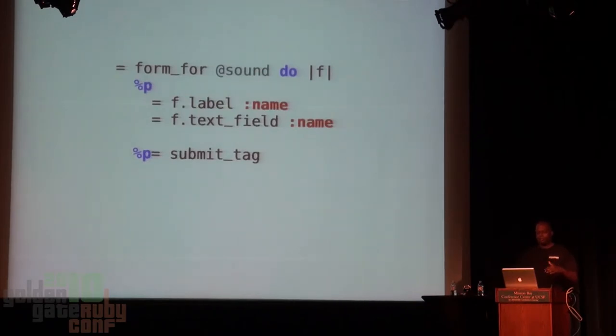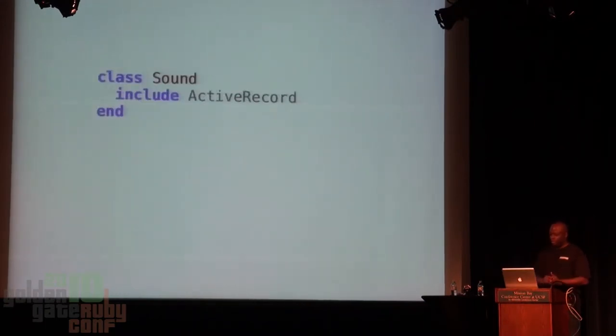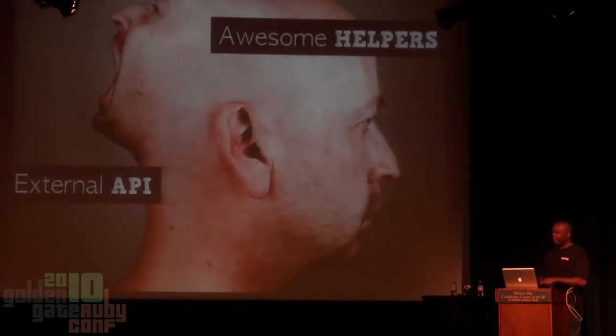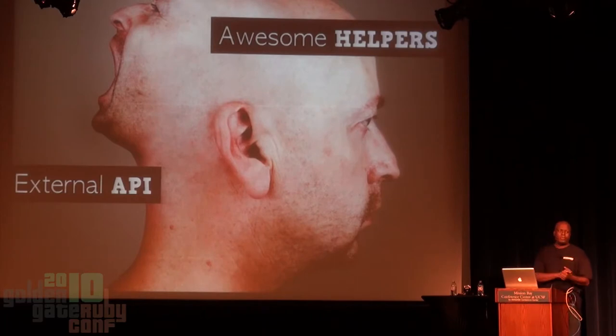Active Model basically gives me a good set of guidelines to allow me to do things the way I want. So Active Model, like I said, is two things: it's an external API — basically a set of guidelines saying you better do this, and if you do, things will work — and it's also a set of awesome helpers.